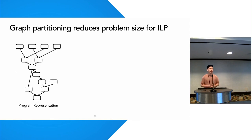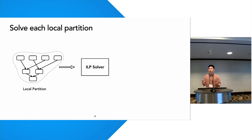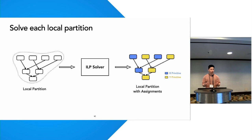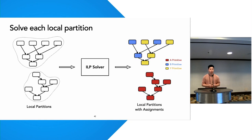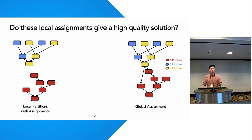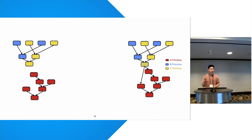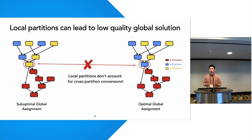One approach to scaling the ILP solving time is to reduce the number of constraints passed into the ILP solver. To do this, we use graph partitioning to partition our program into local partitions. We then pass each local partition into the ILP solver to solve independently and get back local assignments. After repeating this for all partitions, we rejoin each local assignment to get our global solution. However, one question arises: do these local assignments give a high-quality solution? Unfortunately, even if we use the best local assignment for each partition, we can still get a suboptimal global solution, because local assignments don't account for cross-partition edges and the potential conversion costs on those edges.